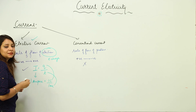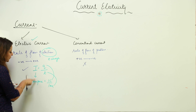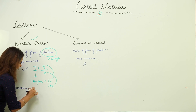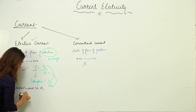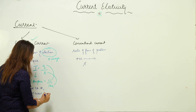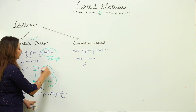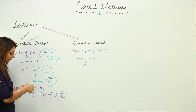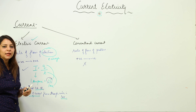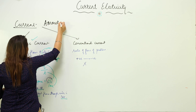One ampere equals one coulomb over one second, since the unit of charge is coulomb and time is second. You don't need to cram the definition — you can derive it yourself. Current is said to be 1 ampere when 1 coulomb of charge flows through a wire in 1 second. The instrument used to measure current is the ammeter.